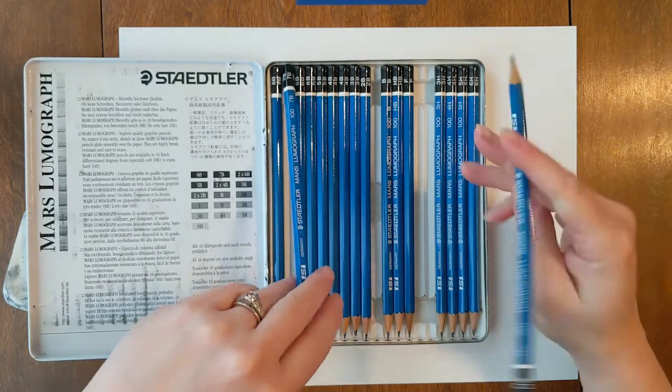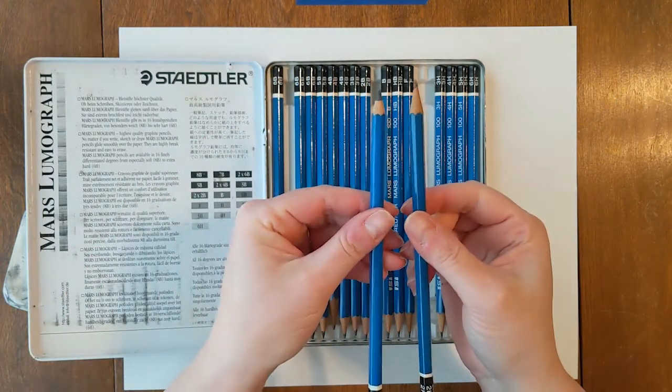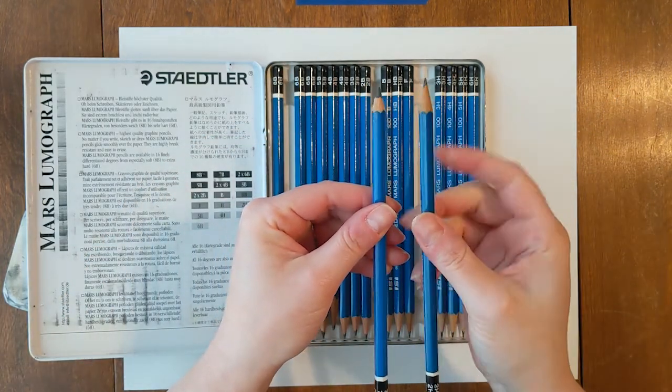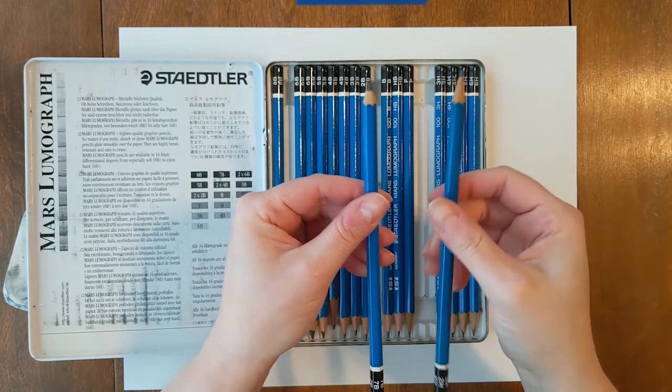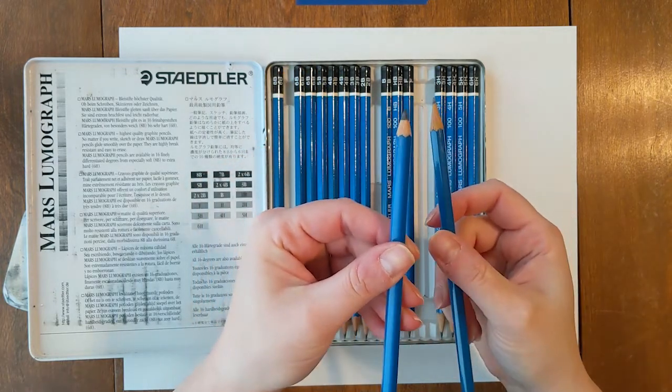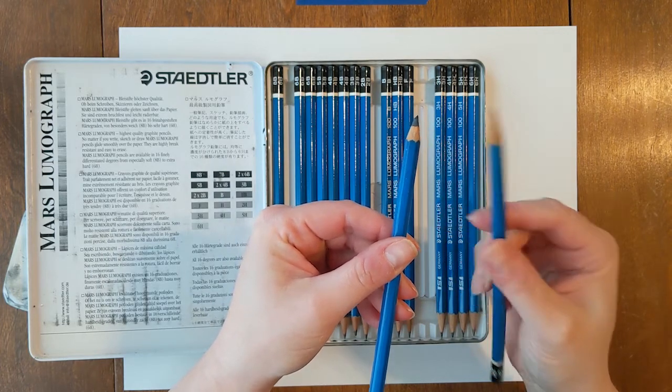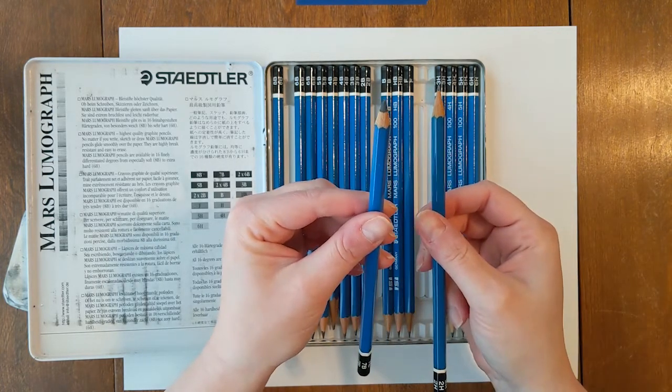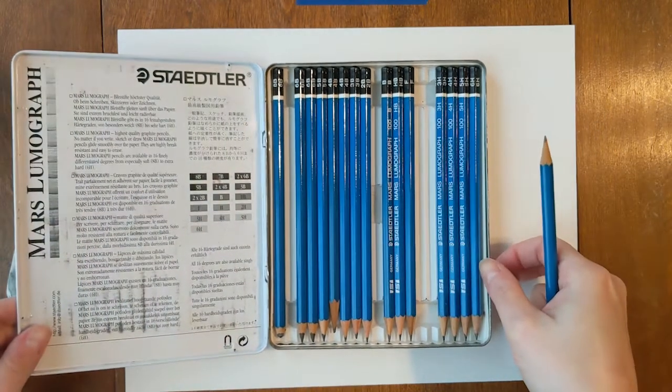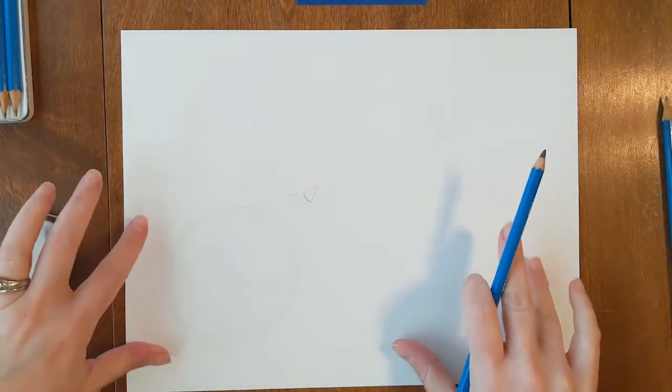So B is nice and soft. You can see if you compare the tips of these pencils, my 2H pencil, it's nice and sharp and pointy and small, where my 7B pencil is a little bit bigger and it's a little bit more dense because this is a soft graphite. This one's hard, this one's soft. So this one is going to make a much darker line than my 2H pencil.